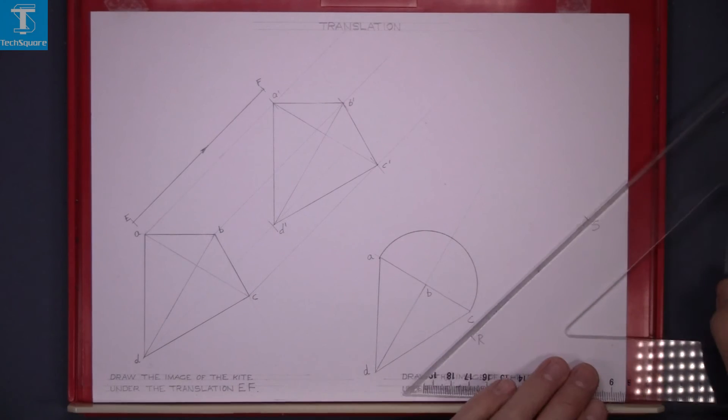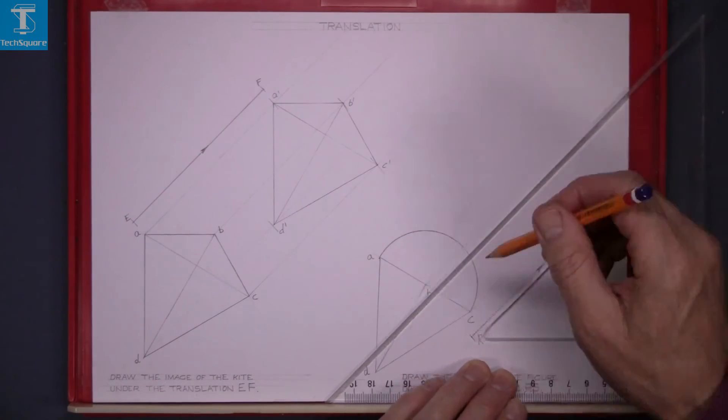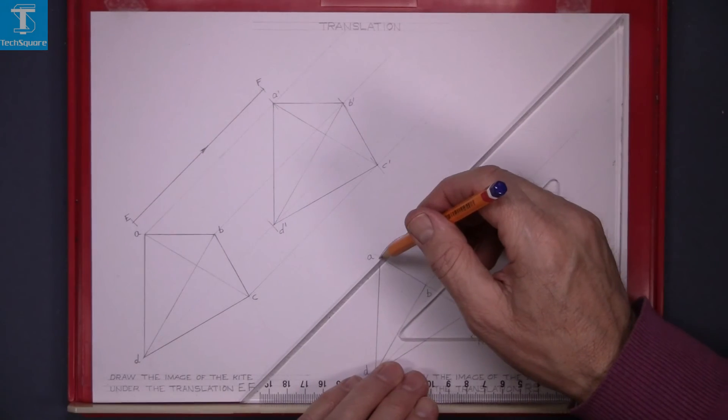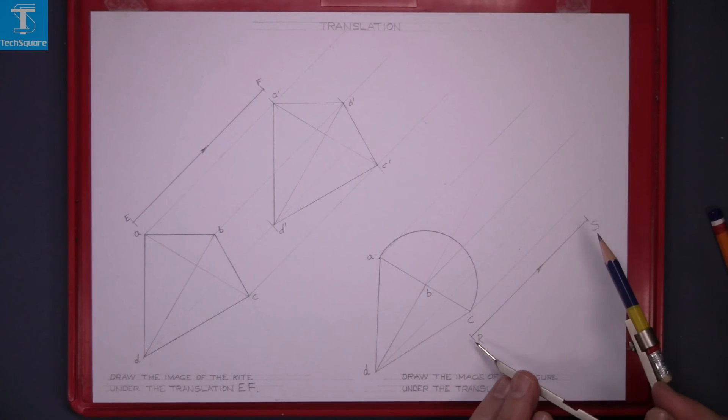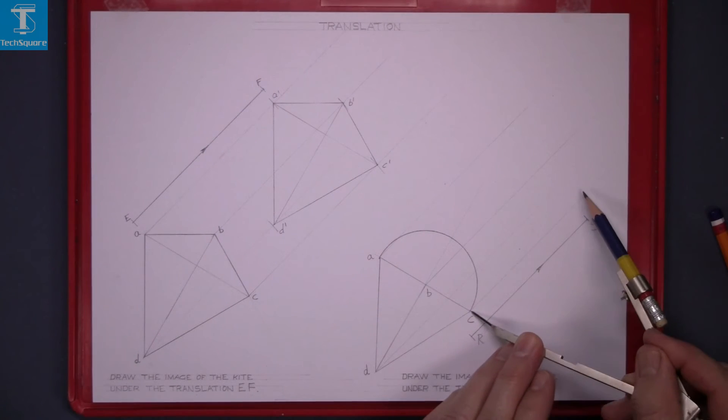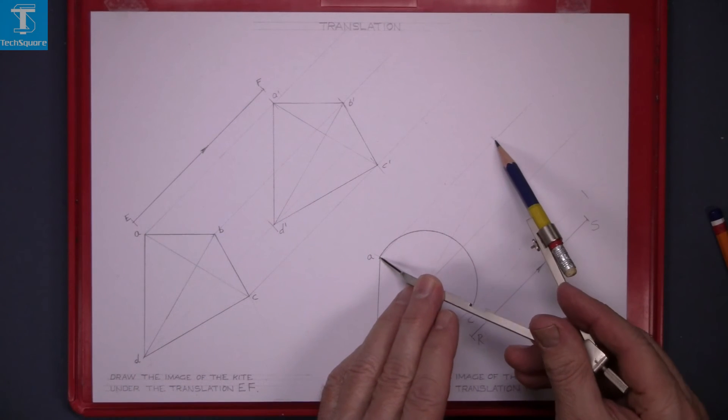First thing draw through each point parallel to the RS translation line. Set the compass to the length RS. Put the pointer compass in each point and step off on the corresponding line.